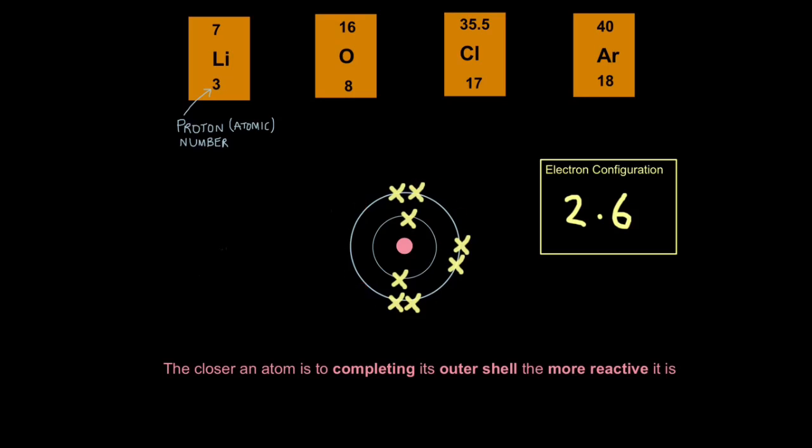The electron configuration for oxygen atom would be 2.6 because we have two electrons on the first shell and six electrons on the second shell. Oxygen is also a pretty reactive atom because it's fairly close to getting a complete outer shell. If it just has two more electrons, then it will become stable. So, let's add those two electrons here. And now we have an oxygen ion. Because now we have two more electrons in the shells than we have protons in the nucleus, an oxygen ion has a charge of 2 minus because it's gained two negative particles.